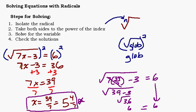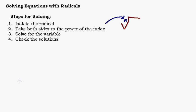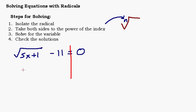Those are the general steps. Let's try a little more complicated one. Let's say we have the square root of 5x plus 1, and then minus 11 is outside the square root, equals zero. Step one is to isolate the radical — we don't have that because of the minus 11, so we add 11 to both sides. Now we've got the square root of 5x plus 1 equals 11, and it's just like the other problem.